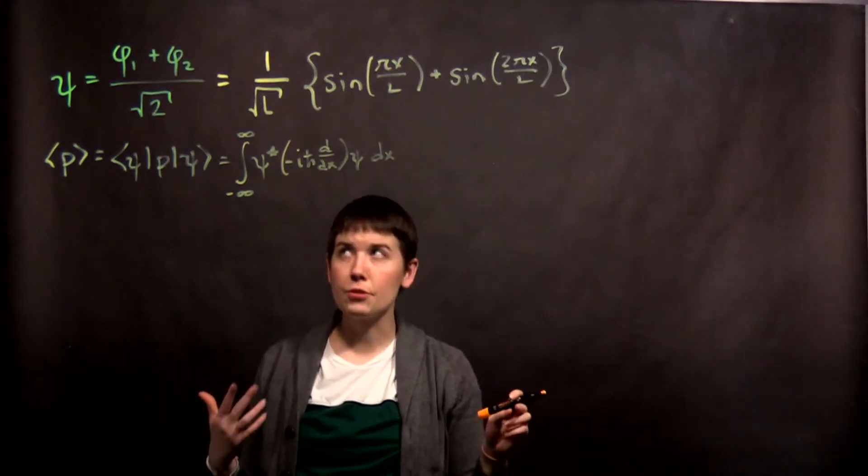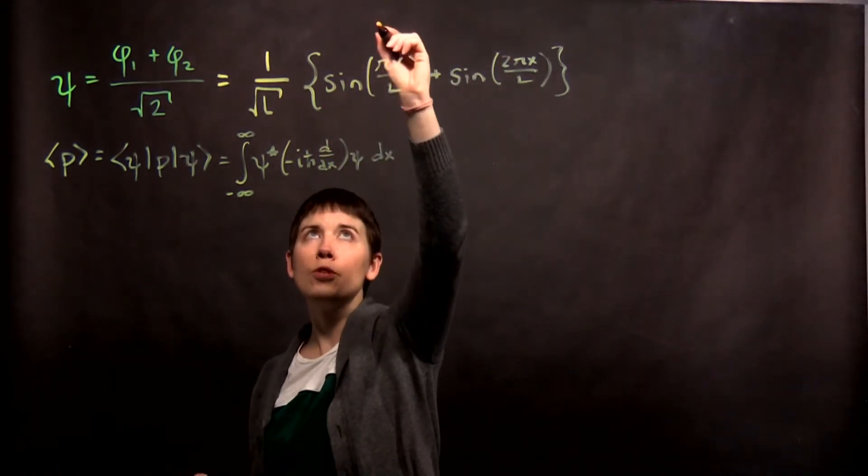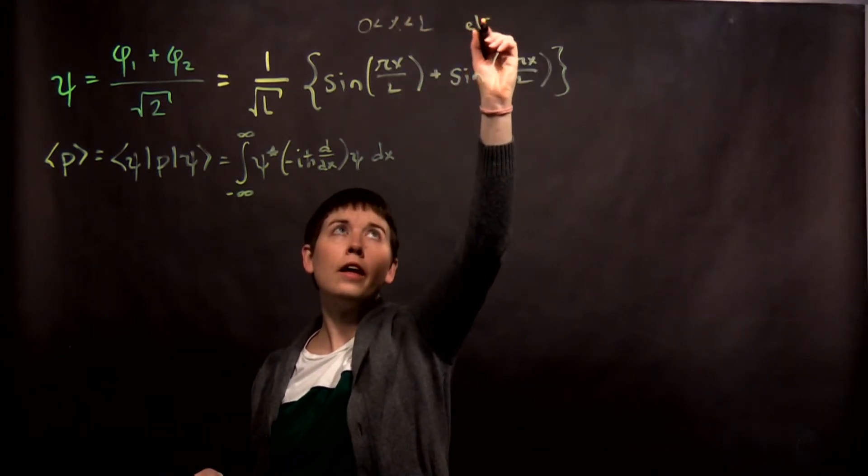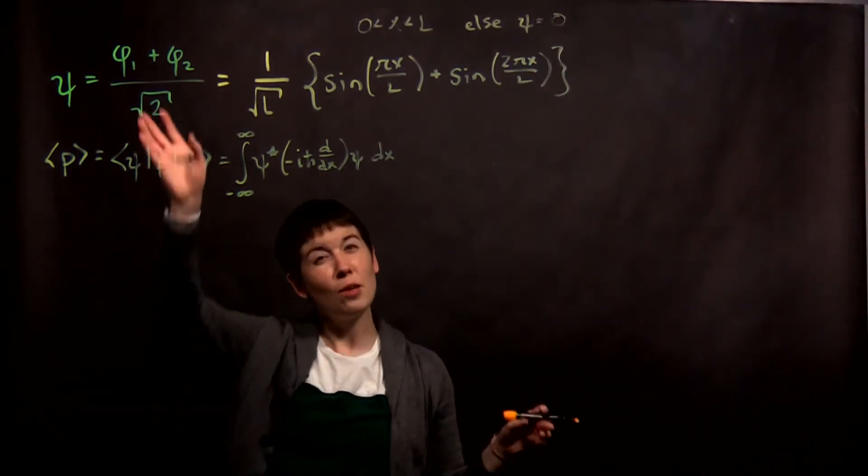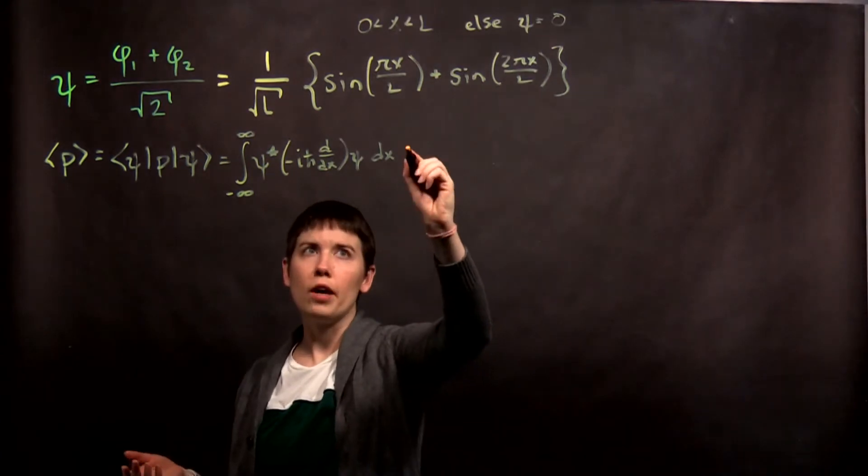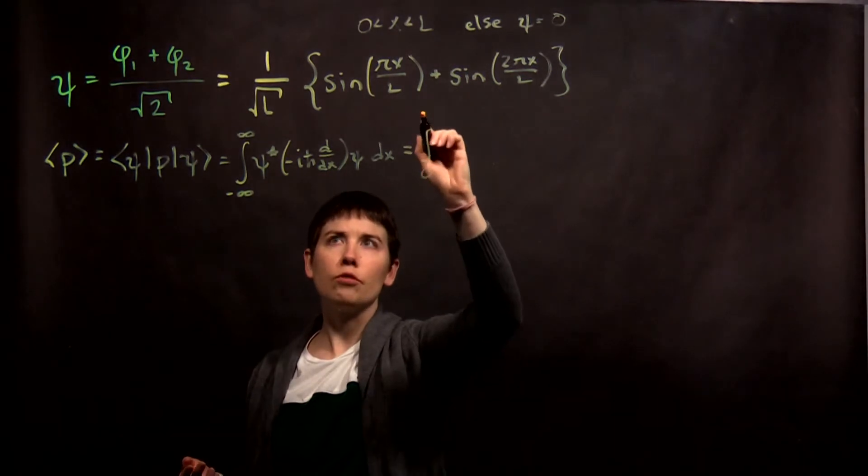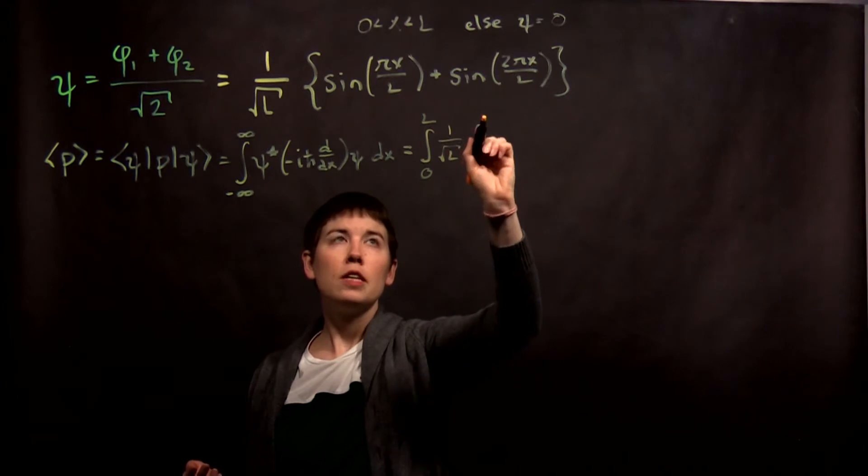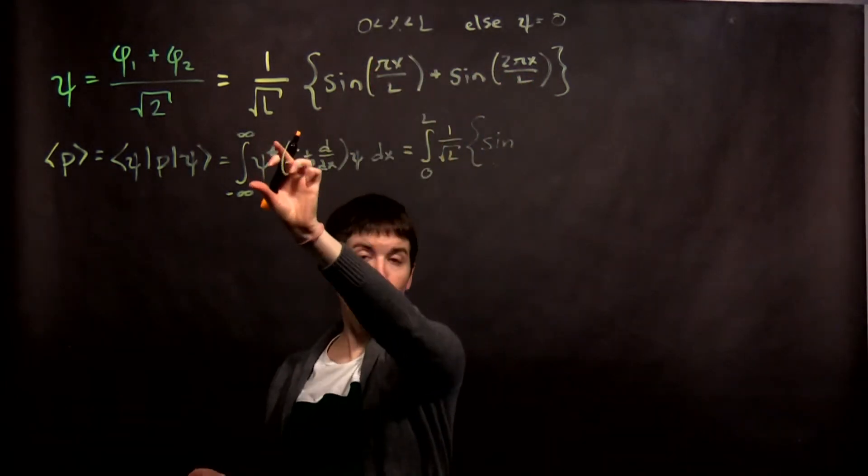So, the key here is to remember, because we're in the infinite well, when we've written this, this is in fact only true for when x is greater than zero and less than L, else we say that psi is equal to zero. So that's kind of implicit here. I haven't written that out explicitly. So while we've written the integral this way, when we go to actually now plug this in, we would just say this is the integral from zero to L. And so the first thing I'm going to do is write this representing that psi star.